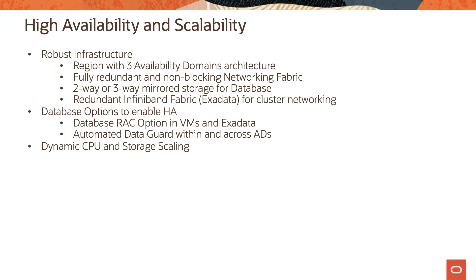Let's now look at high availability and scalability. OCI has robust infrastructure with regions featuring a three-availability-domain architecture, fully redundant and non-blocking networking fabric, and the option of two-way or three-way mirror storage for databases. In the case of Exadata, it has redundant InfiniBand fabric for cluster networking. For high availability, OCI DB systems offer two options: the Oracle RAC option in virtual machines and Exadata, and automated Data Guard deployment within and across availability domains for VMs and bare metal shapes.